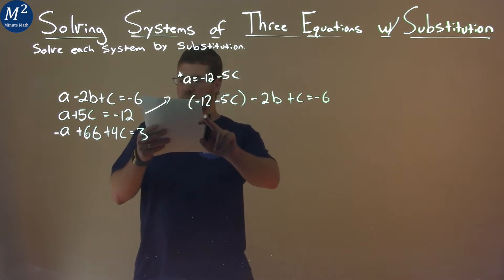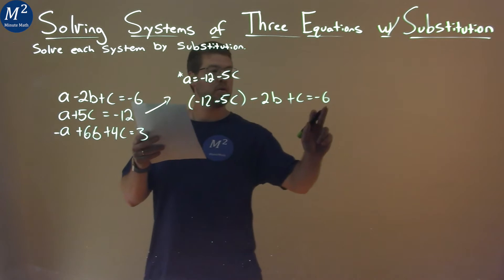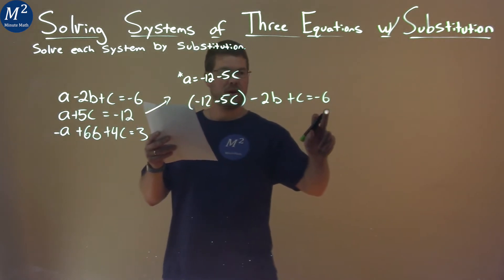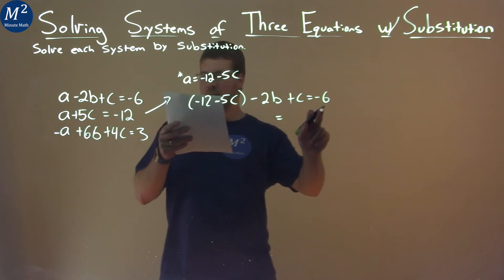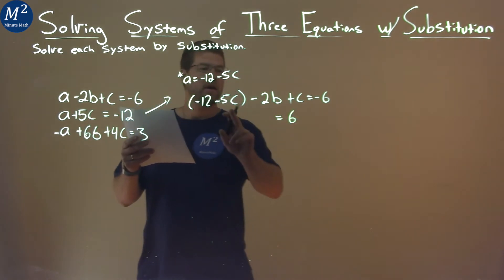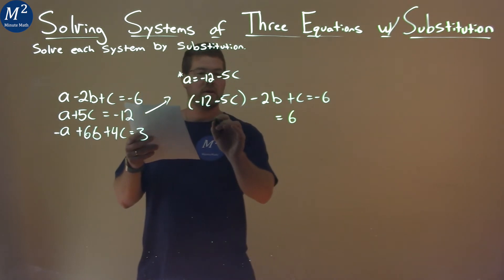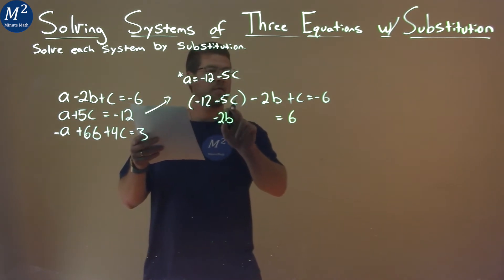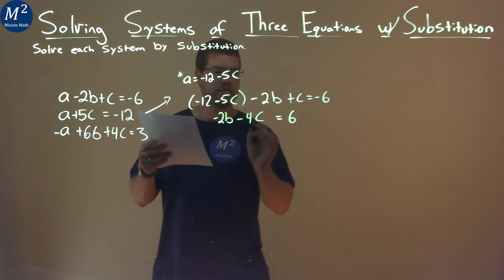So, now let's simplify this. Well, let's combine what we can with our like terms. And if we add 12 to both sides, we have negative 6 plus 12 is a positive 6. Then, I'll put B's first, negative 2B over here. And then negative 5C plus 1C is negative 4C.